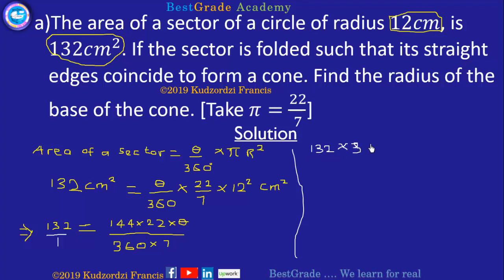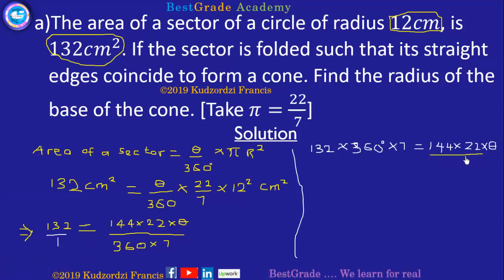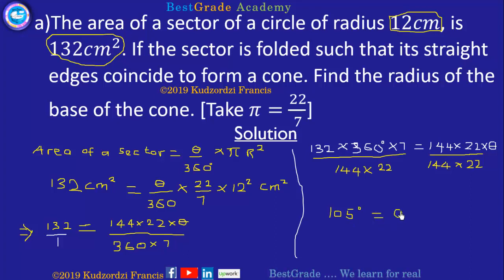Cross multiplying gives 132 times 360 degrees times 7 on one side. Dividing both sides by 144 times 22, we get theta equal to 105 degrees. So the angle of the sector is 105 degrees.